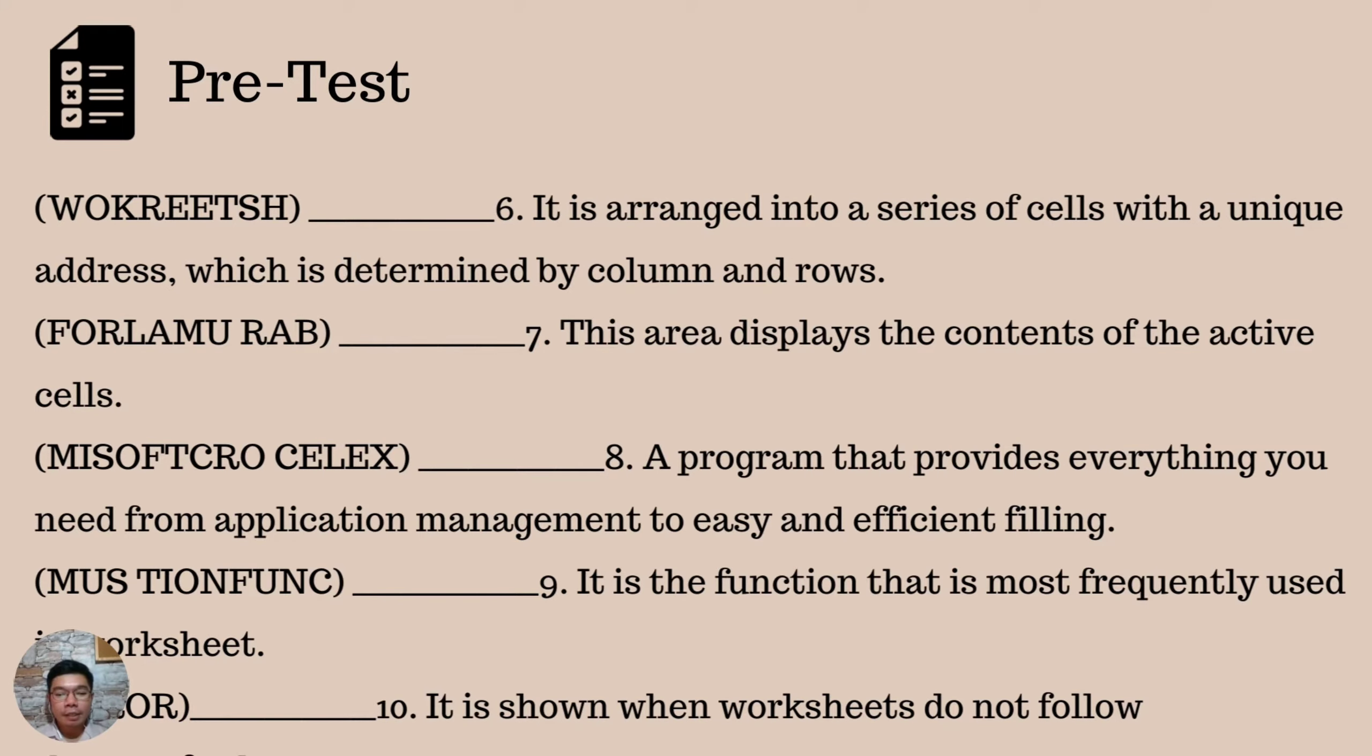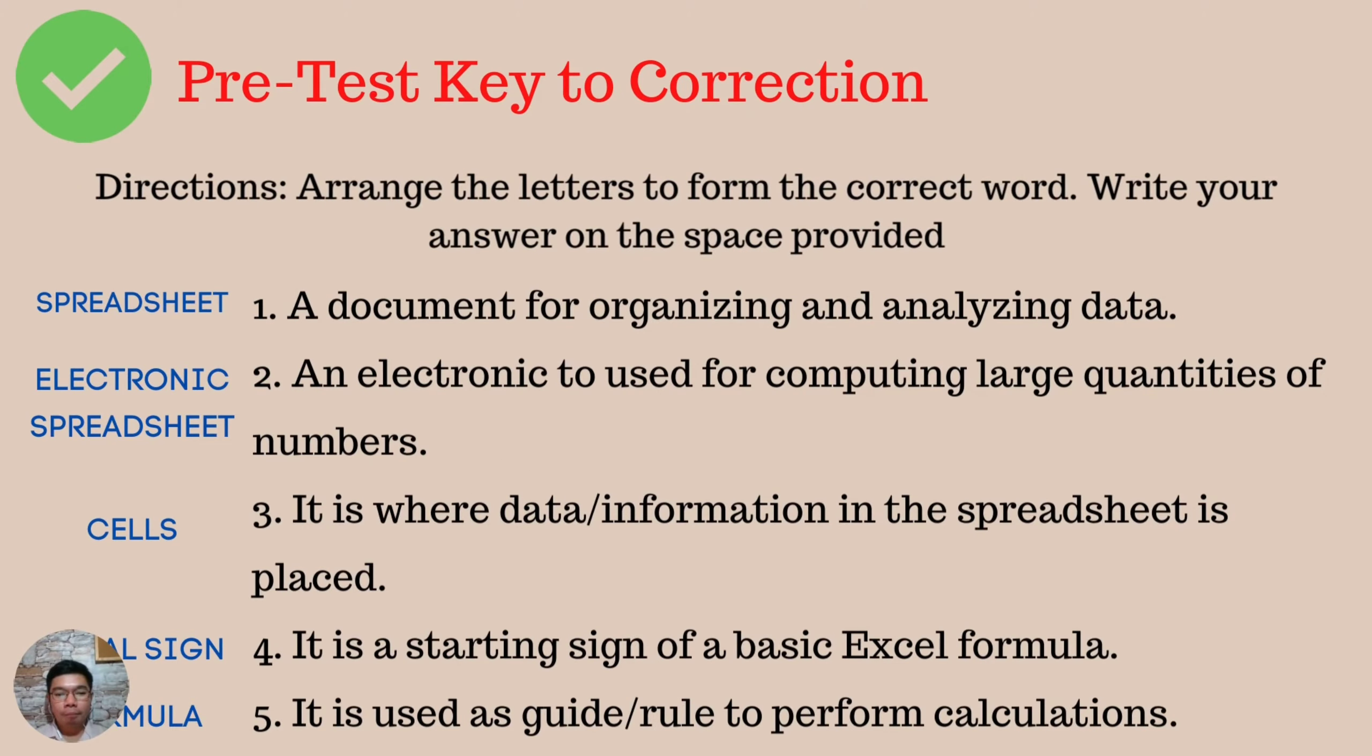Let us now check your work. Here is the key to correction for the pre-test. Number 1. A document for organizing and analyzing data is a spreadsheet. An electronic to use for computing large quantities of numbers, electronic spreadsheet. It is where data information in the spreadsheet is placed. The answer is cells. It is a starting sign of basic Excel formula. The answer is equal sign. It is used as guide or rule to perform calculations. The answer is formula.